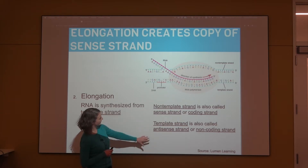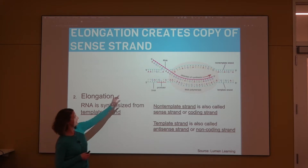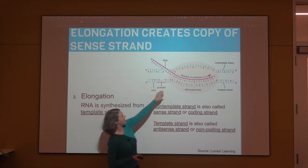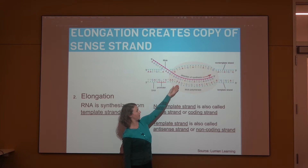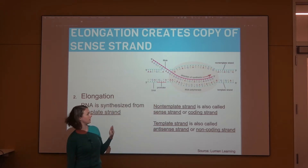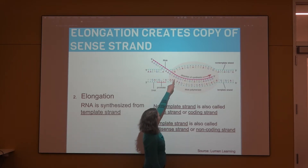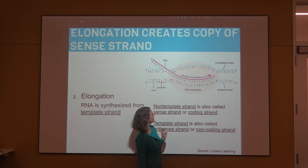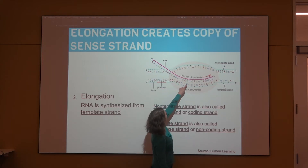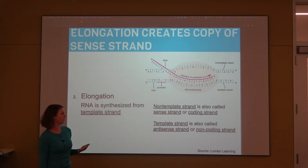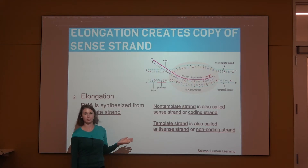There are other terms used to describe these two different strands that are used widely in human genetics. We have the template strand — that makes sense because the RNA is elongated from that template strand. The non-template strand is also called the sense strand or the coding strand. If you look at the sense or coding strand, the RNA is pretty much an exact replicate of it, except instead of T's we have U's. So here we have G, C, A, C, then U instead of T, then C, A, U. That's why it's called the sense or coding strand. The template strand is also called the anti-sense strand or the non-coding strand.